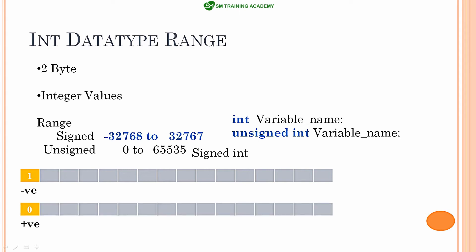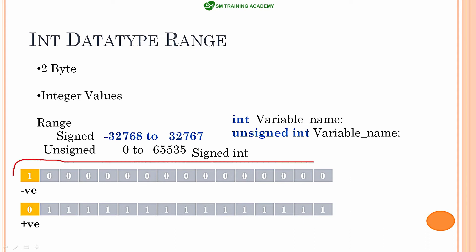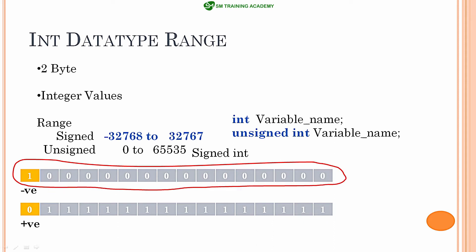So, 0 in the signed bit means positive number and 1 means negative number — that is the 15th bit. The minimum value that can be stored is in the negative section, represented as all 0s except the signed bit being 1. The maximum number has all 1s except the signed bit being 0, indicating the number is positive.